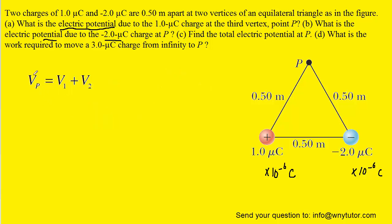For part C, to calculate the total potential at point P, all we have to do is add up the two potentials we found in parts A and B. Notice these are not vector quantities, so we don't have to find any components or do anything fancy like that. We simply add the values that we got in part A and B.